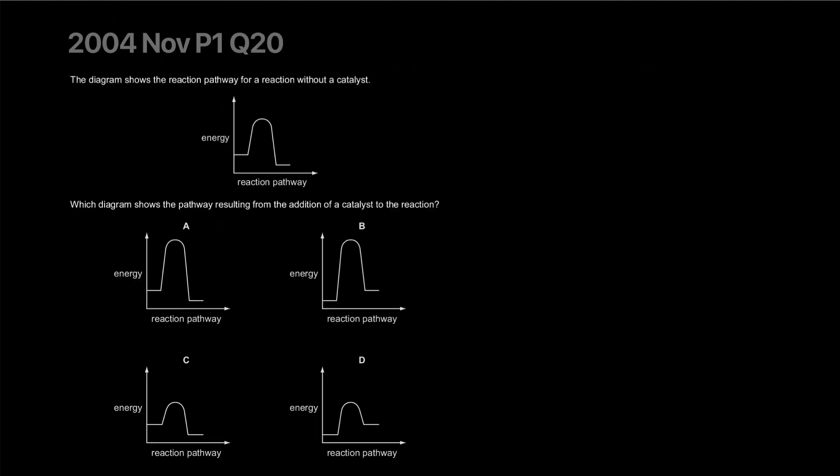The diagram shows the reaction pathway for a reaction without a catalyst. Which diagram shows the pathway with addition of a catalyst? What's going to happen with the catalyst is that the activation energy is going to lower, so this peak will be lower and nothing else will change. The correct answer is C.